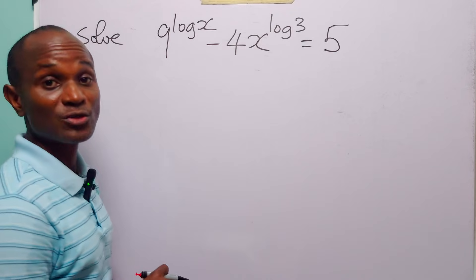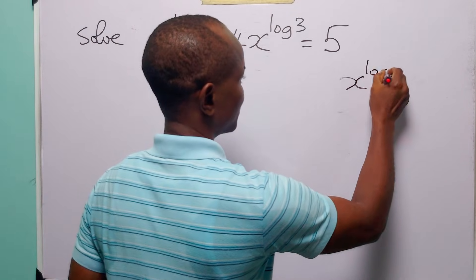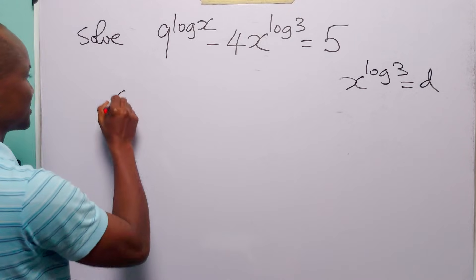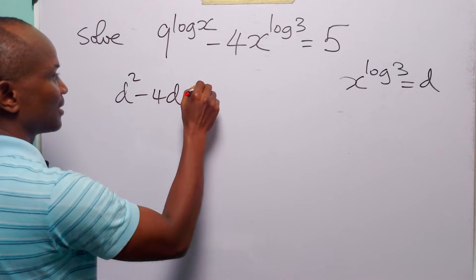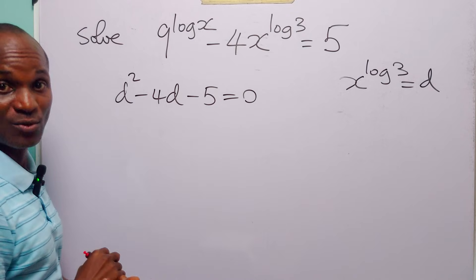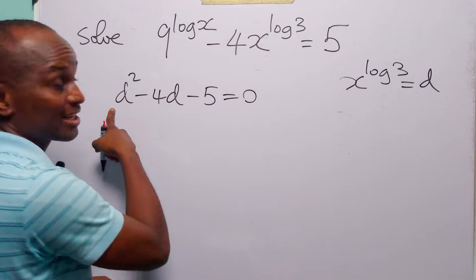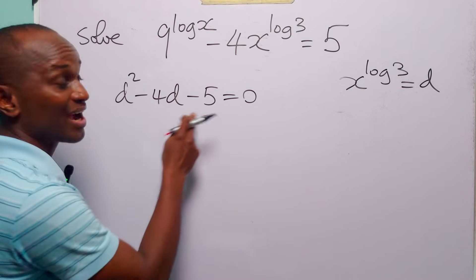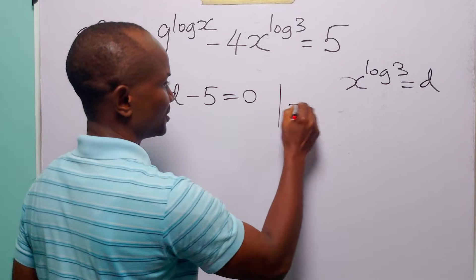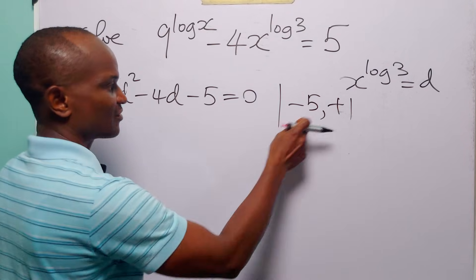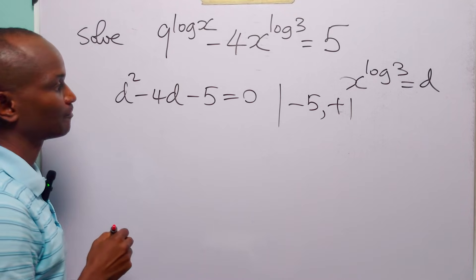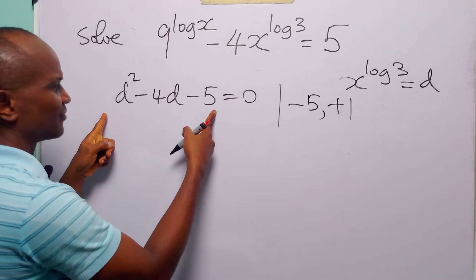To finish the solution, let x to the power log 3 equal d. The equation becomes d squared minus 4d minus 5 equals 0 — moving 5 to the left-hand side. We solve this quadratic by factorization. Since the coefficient of d squared is 1, we need factors of minus 5 that add up to minus 4, which are minus 5 and plus 1, because minus 5 times plus 1 is minus 5, and minus 5 plus 1 is minus 4.